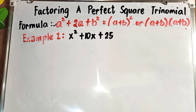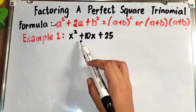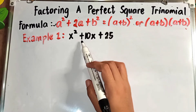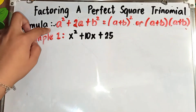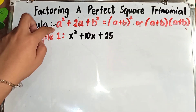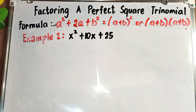For example, you are asked to factor x² + 10x + 25. The middle term is positive, so we will use the first formula: a² + 2ab + b² = (a + b)² or (a + b)(a + b). Here are the steps to get the factored form.